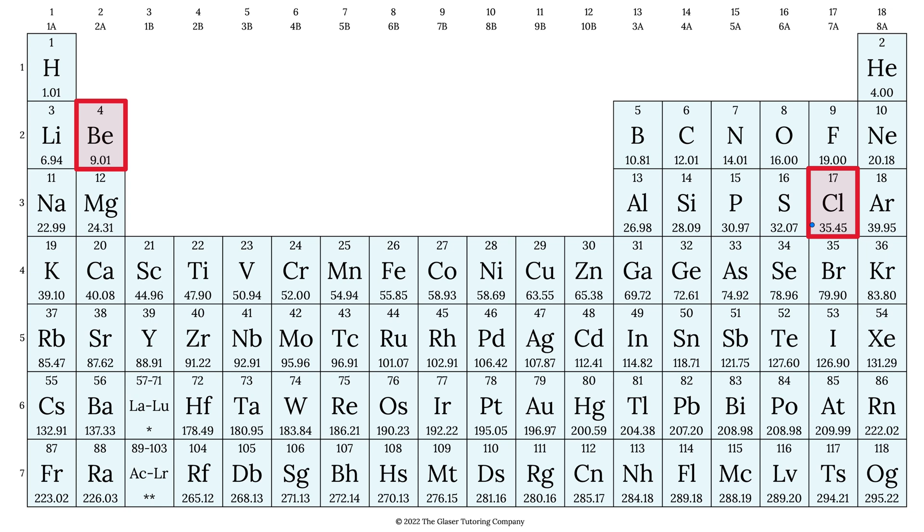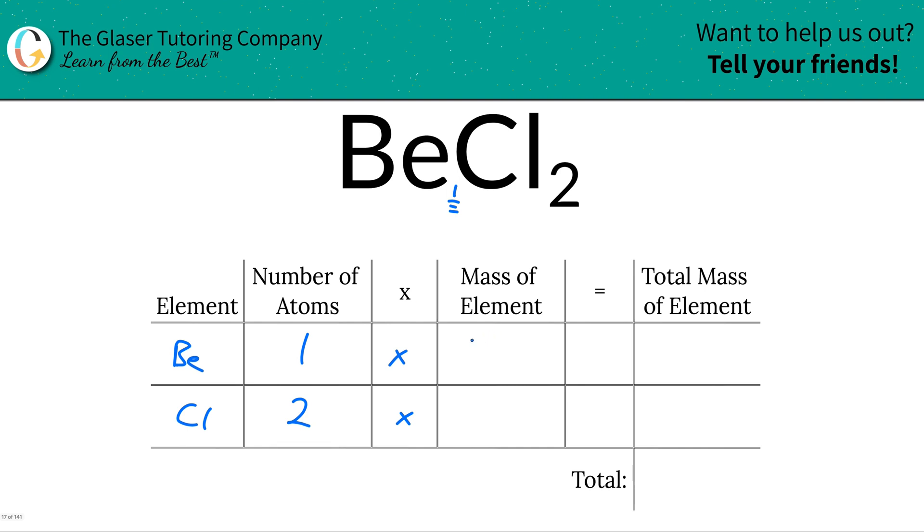Those units there for those numbers would be the gram per mole if you're calculating a molar mass or AMU if you're calculating molecular mass, all right? So this is going to be 9.01, and then the molar mass of chlorine is about 35.45.